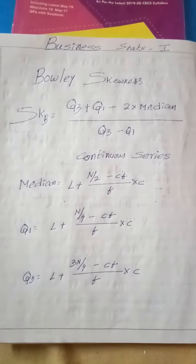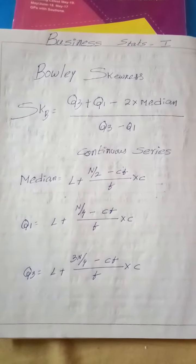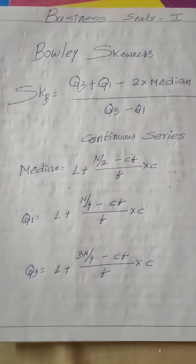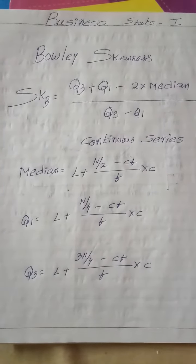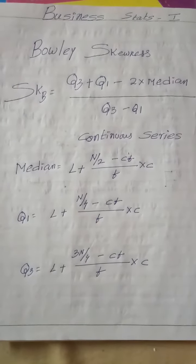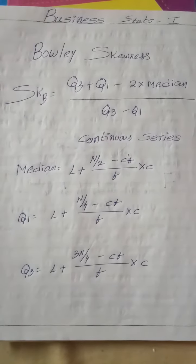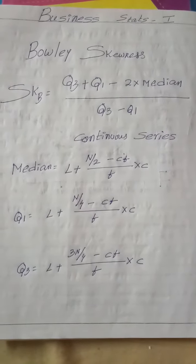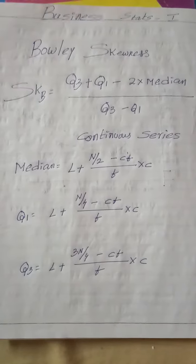You know, my dear students, in continuous series the median formula is L plus N by 2 minus CF by F into C. Q1 formula is L plus N by 4 minus CF by F into C. Q3 formula is L plus 3N by 4 minus CF by F into C.